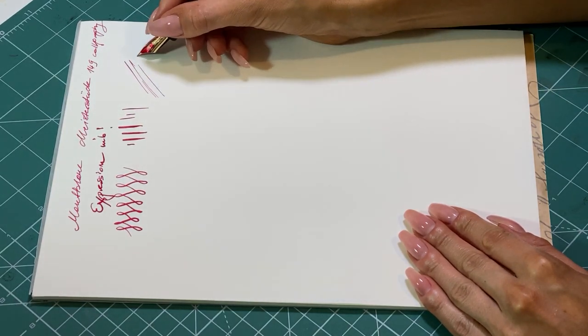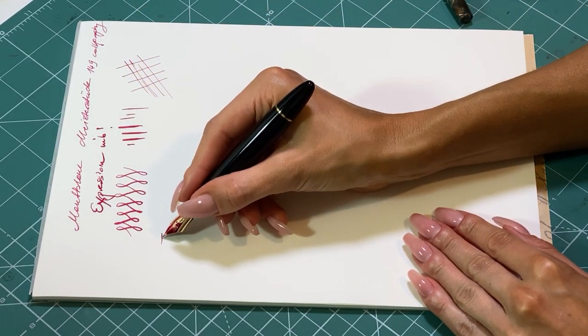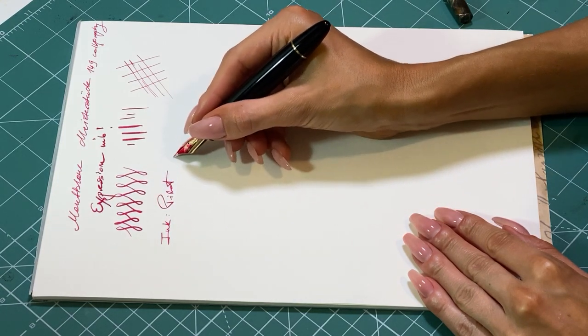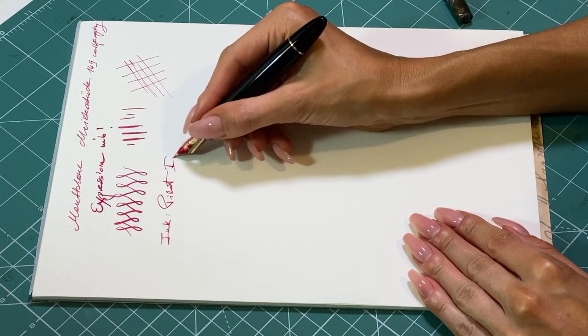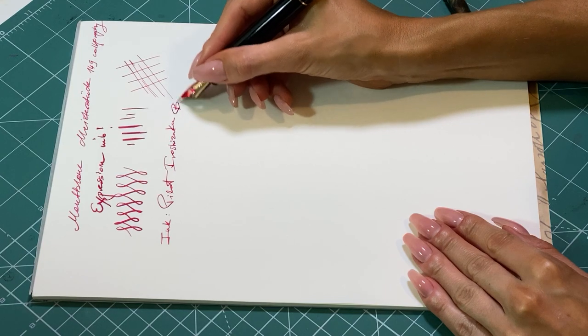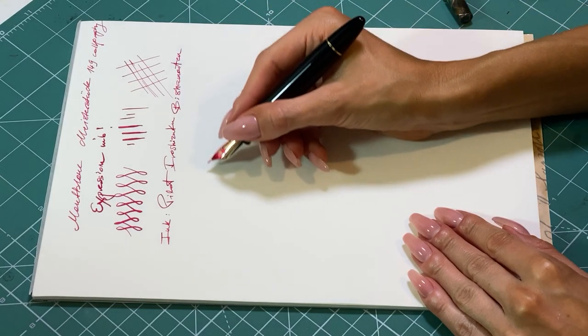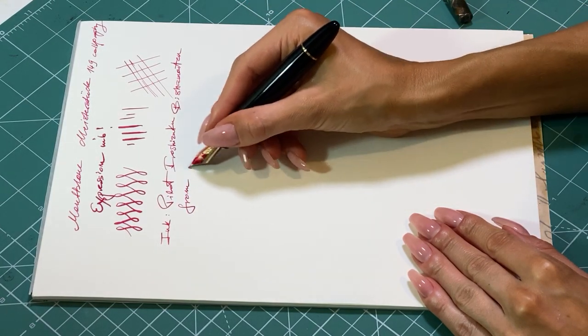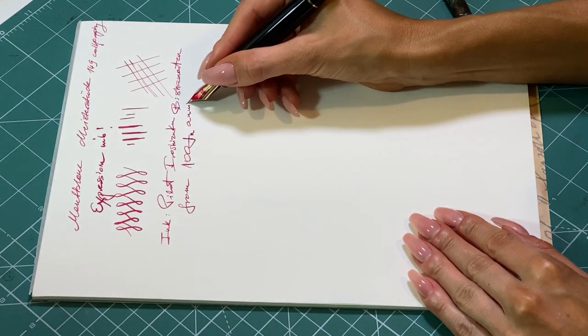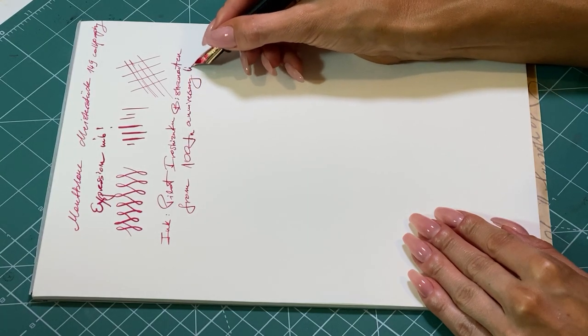The nib on this pen is called Expression nib by Montblanc and as you can see it flexes quite well but it's quite stiff. It's got good feedback but you need to use more pressure than with vintage flexible nibs. If not pressed, it writes like extra fine, so the line is very thin. But pressed it goes to over two millimeters.